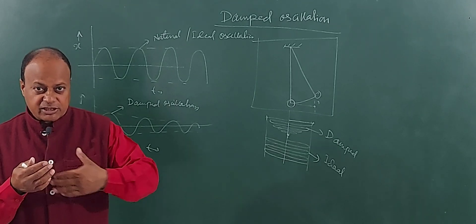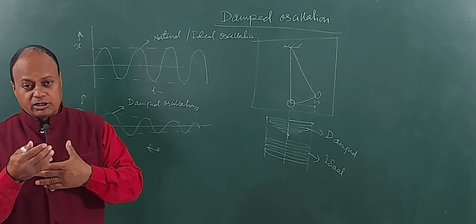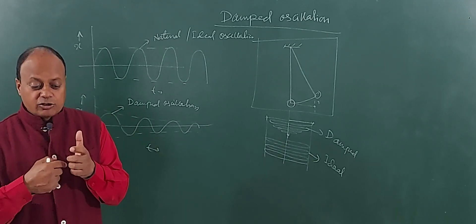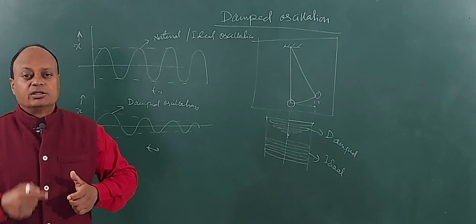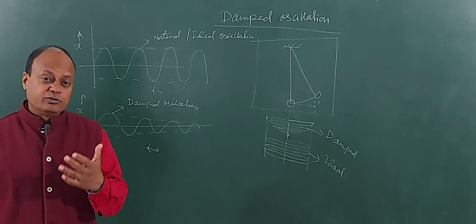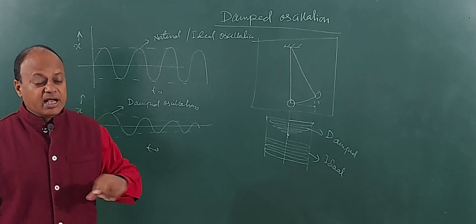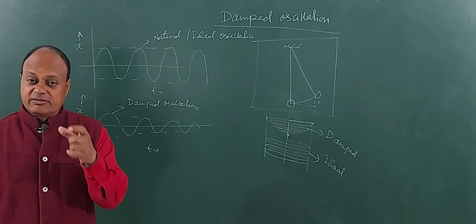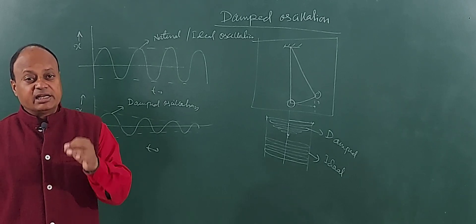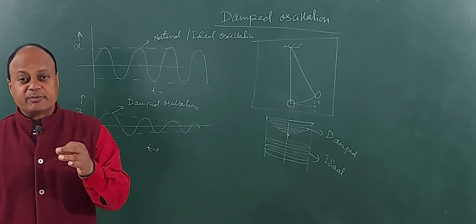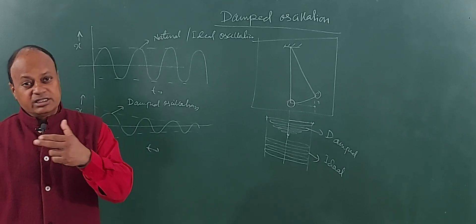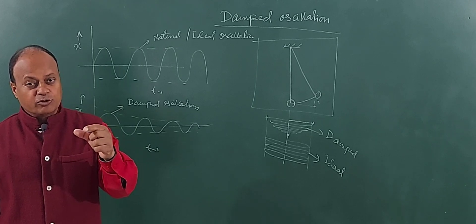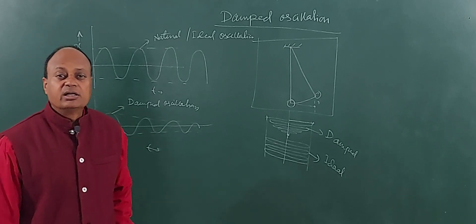In order to push the medium particles, the oscillator has to perform a certain amount of work. When you do work, energy gets spent. As the energy decreases, you know that the energy of an oscillating particle is directly proportional to the square of the amplitude. So when energy decreases, the amplitude will also go on decreasing. This is the reason for damping.